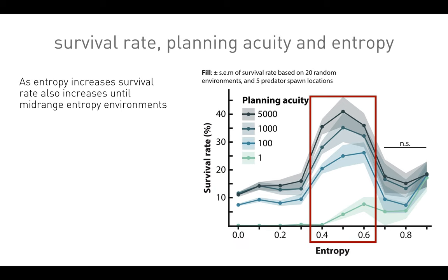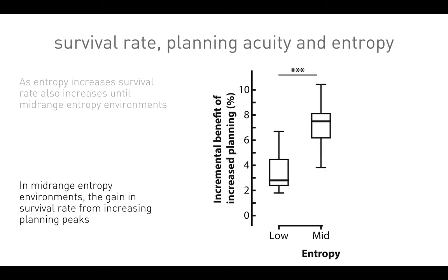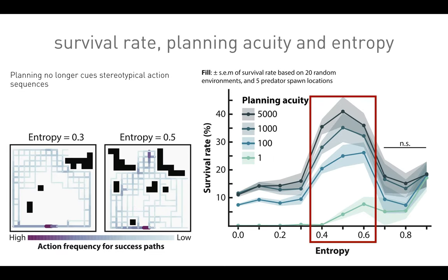As entropy increases, survival rate also increases until mid-range entropy environments are reached, where the incremental benefit goes up considerably. You can see in the heat map of success paths how the dispersion of the paths is a nice proxy for the variability of behavior in these worlds — more dispersion of success paths at higher entropy. Planning no longer cues stereotypical action sequences; even in a fixed environment, the prey's predator avoidance behaviors are now highly variable.